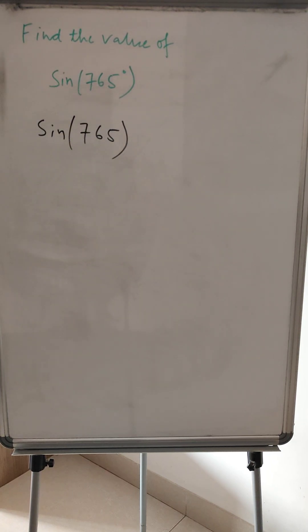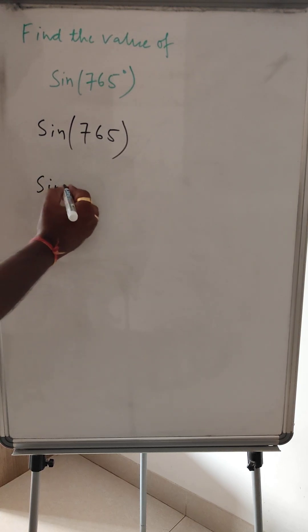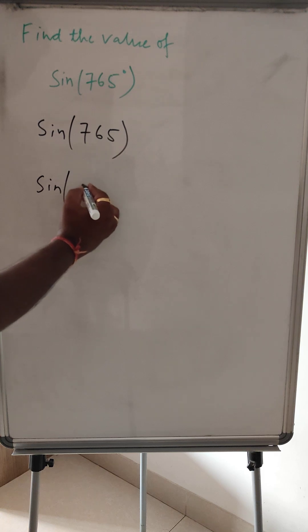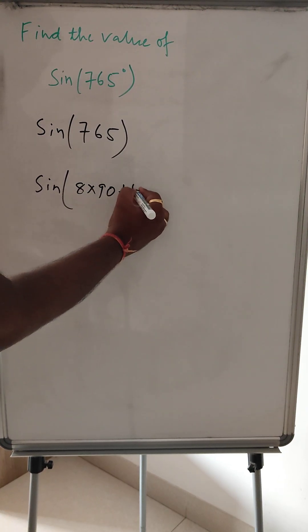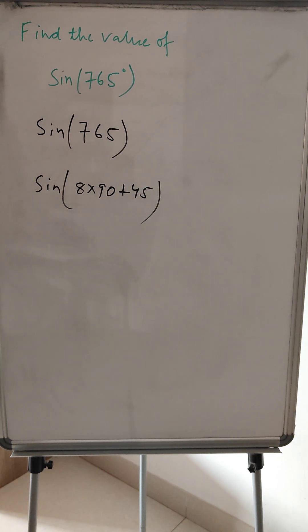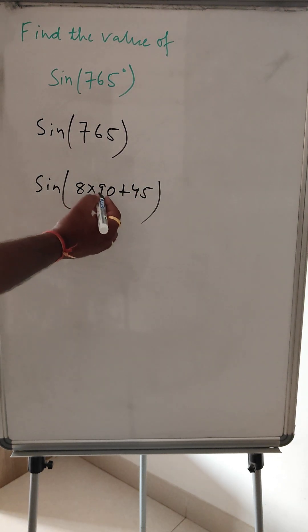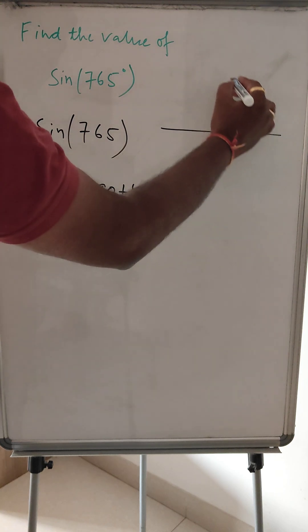So we have to use the quadrant. So we can write it into the multiple of 90, so 8 into 90 plus 45, correct. So we can write like this and we can create one quadrant.